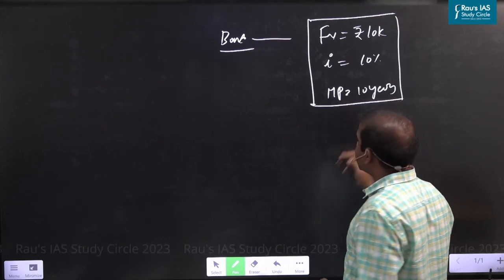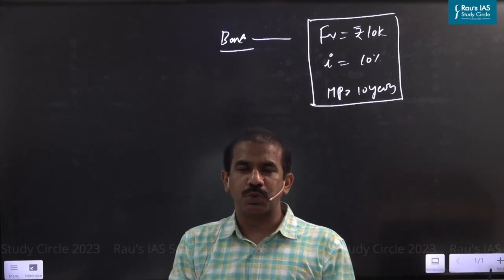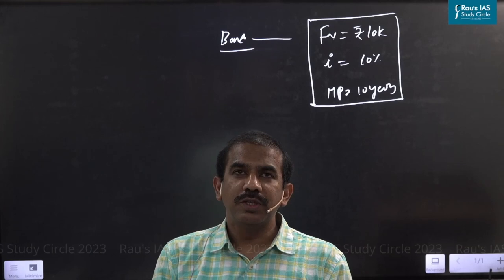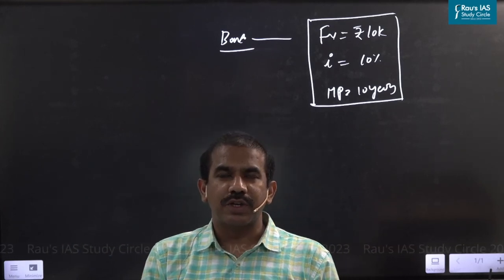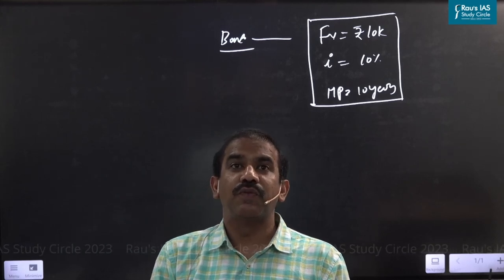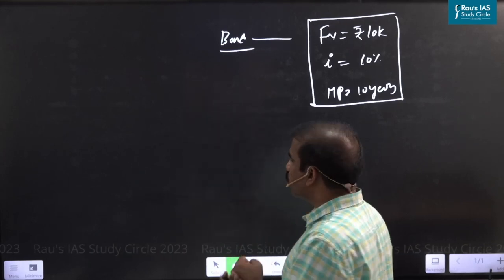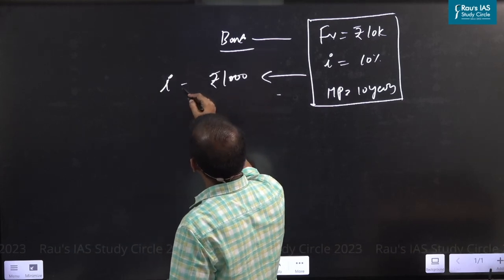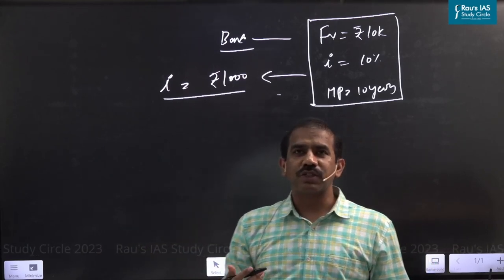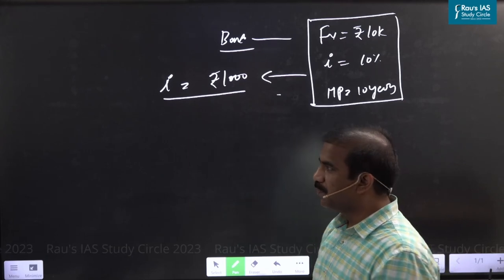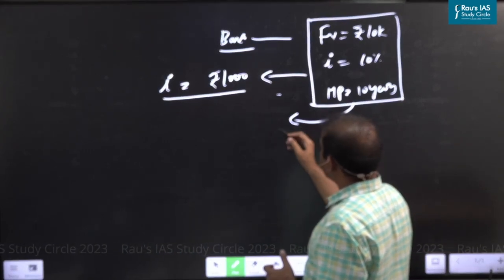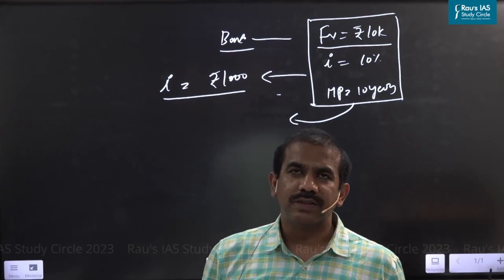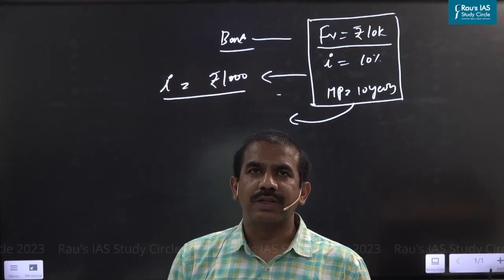So imagine someone printed this paper and approached you, saying: if you buy this piece of paper, I commit to pay you an annual rate of interest of 10%, computed on the face value of the bond. That means the bondholder gets 1,000 rupees per year in interest — 10% of the face value of 10,000. And the promise is: 10 years later, if you bring back the piece of paper, I will redeem it for 10,000. That's simply what a bond is.